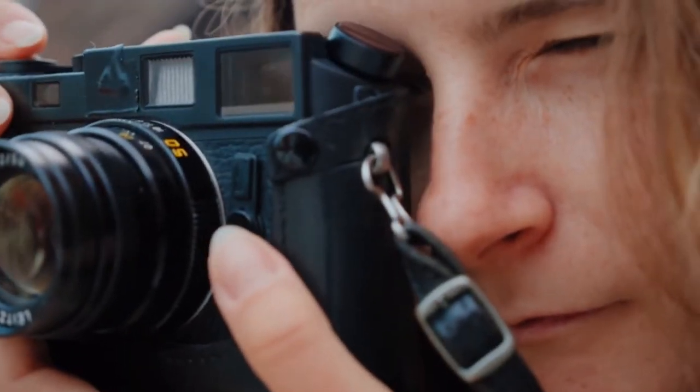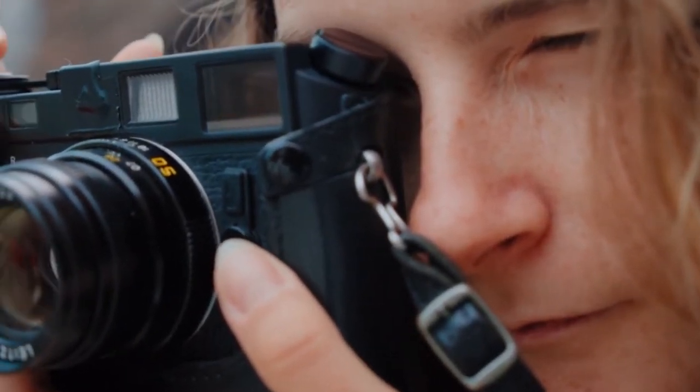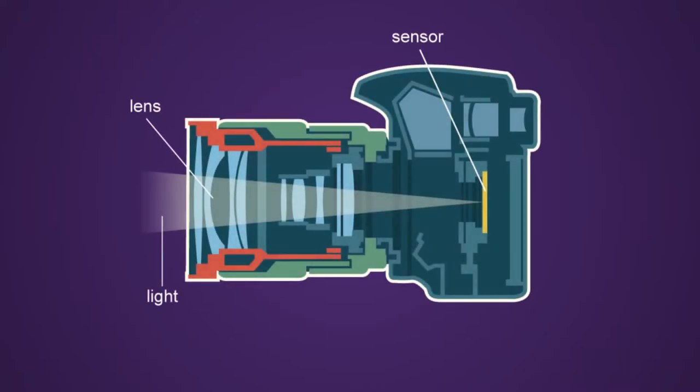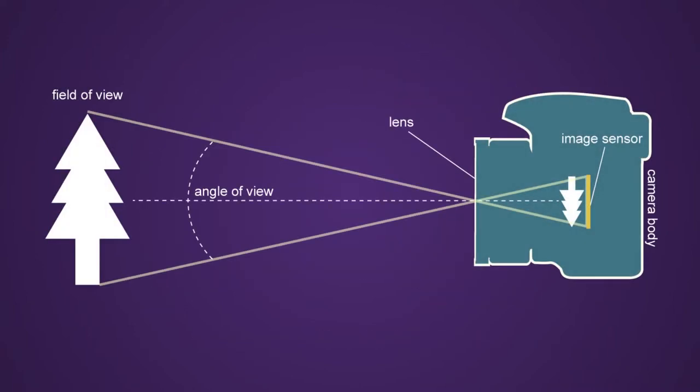Lenses are used to focus the image on the camera's image sensor. Lenses are available in different focal lengths for different types of photography. The focal length of the lens is the distance between the lens and the image sensor. When an image passes through the lens it is inverted onto the sensor, and the camera turns the image around so you can view the image the right way up.